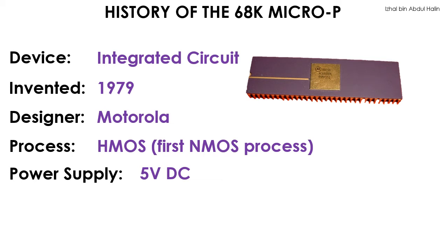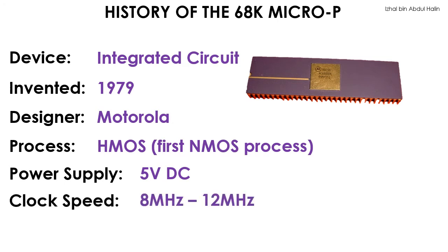The chip is powered from a 5-volt DC supply. Its minimum clock speed is 8 MHz and can be boosted up to more than 12 MHz. This was fast for the time, and in fact, these speeds are still relevant for producing real-time circuits today.